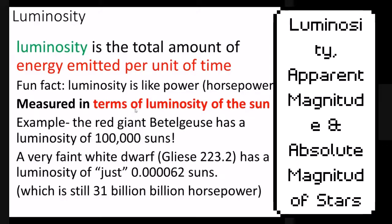Instead, we use terms of luminosity of the sun — you'll see it measured as solar luminosities. For example, Betelgeuse, a red supergiant, has a solar luminosity of 100,000. That's nice and easy to write. Gliese 223, instead of 31 billion billion horsepower, is measured as 0.000062 solar luminosities, or sun's brightnesses.